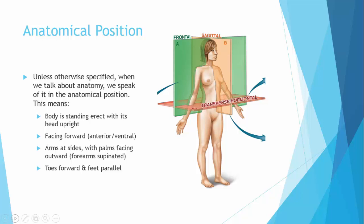The arms are at the sides with the palms facing outward or forward. So that means that your forearms, which go from your elbow to your wrist, are supinated. We'll talk about supination versus pronation, but the tip that I use to help remember what that means is that when you're supinated, your palms are facing forward and you would be able to hold a cup of soup easily without having to manipulate anything. And then the other piece is that your toes are forward and your feet are parallel to one another.